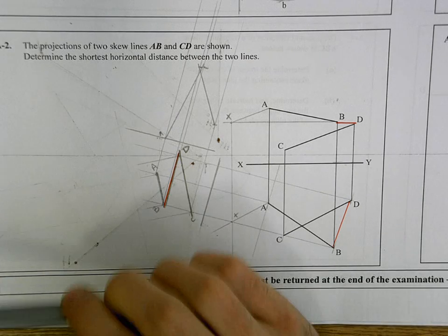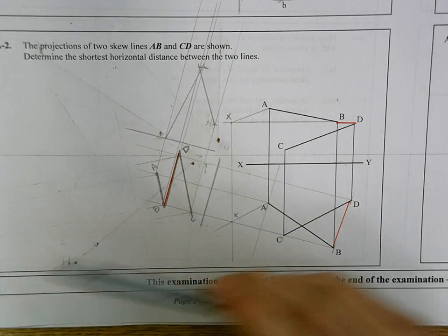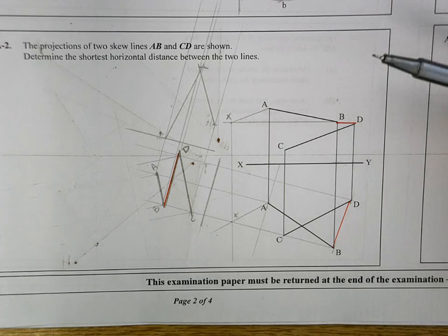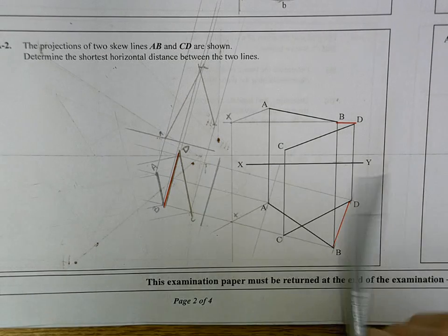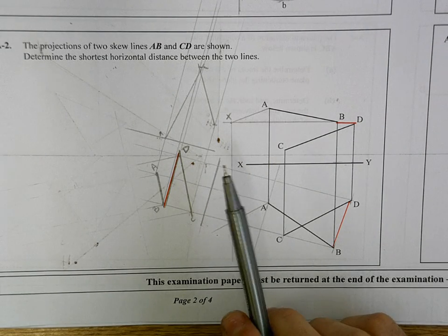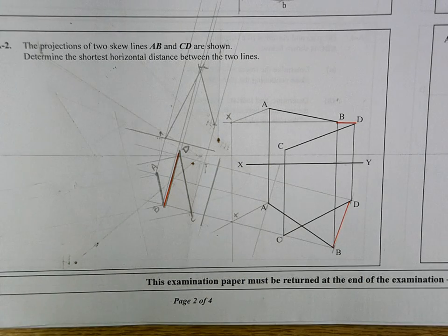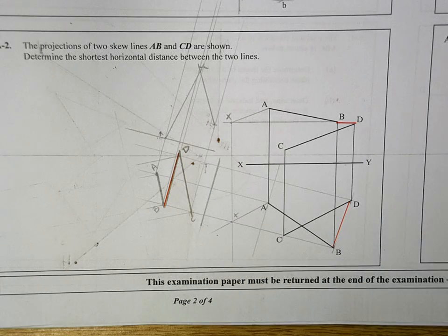A horizontal distance means it has to be a level line. Now, the initial setup is exactly the same. You want to create a level line from one of your skew lines, and then replicate the angle of the other one to find point X. We've been through this before.